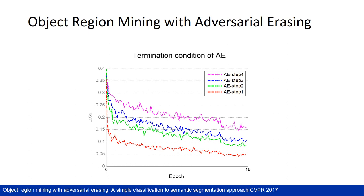Here is the problem of how many erasing steps should be conducted. This figure shows the comparison of classification training loss curves of different adversary-erasing steps. We observe that the loss value is very small when using the original image for training. By performing AE for two steps, the converged loss value slightly increases. By continuing to perform one more step, the loss converges at a large value. We consider this as over-erasing. Over-erasing may introduce many true negative regions into the identified object regions. Therefore, we only use the identified regions in the first three AE steps.